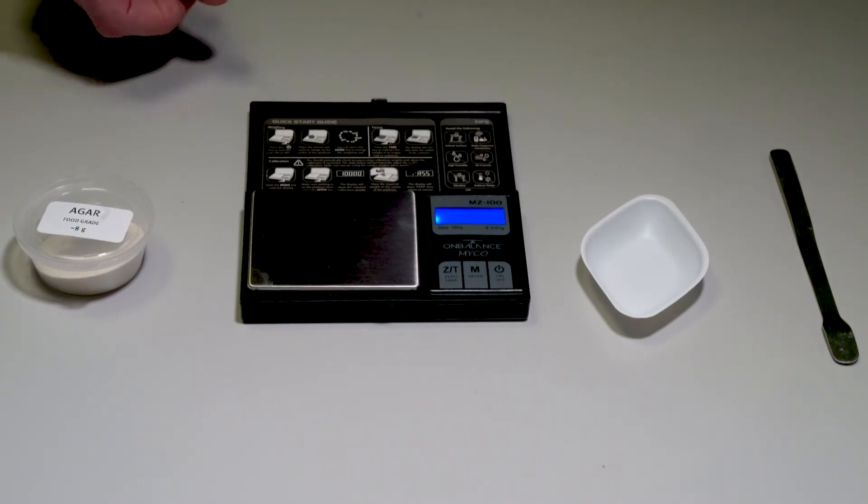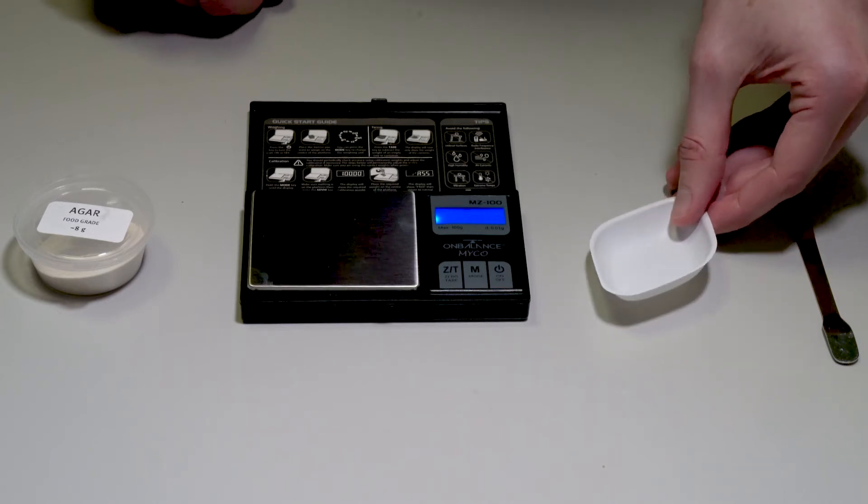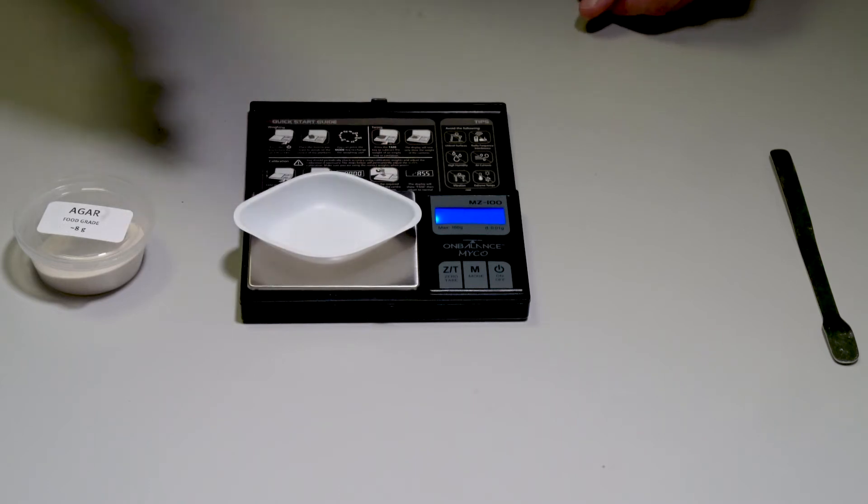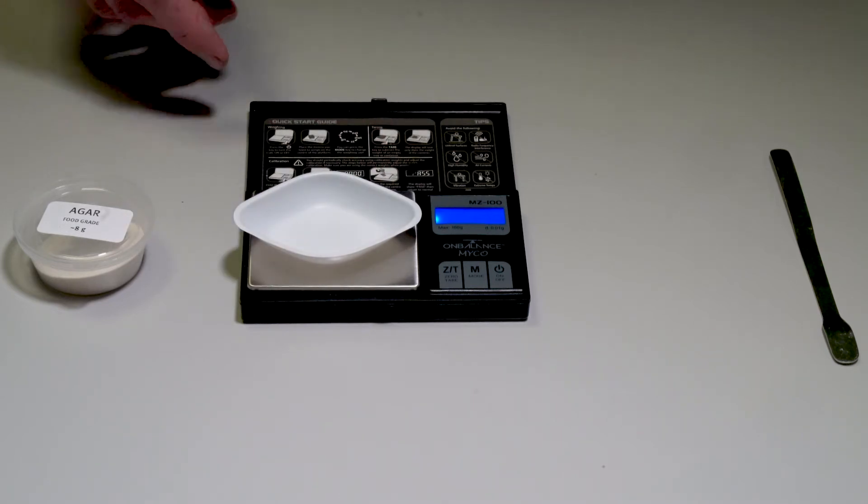We can also use the tare function. What the tare function does is it zeroes the balance taking into consideration the weight of the weighing vessel of choice, in this case a small plastic weighing boat.